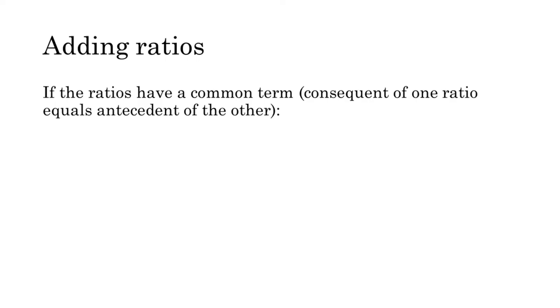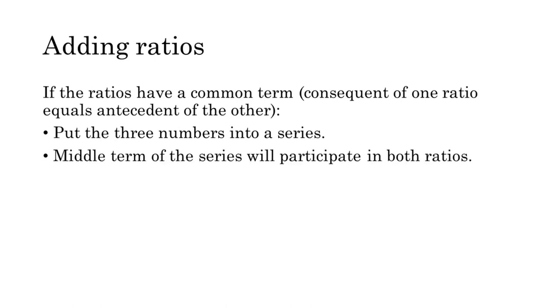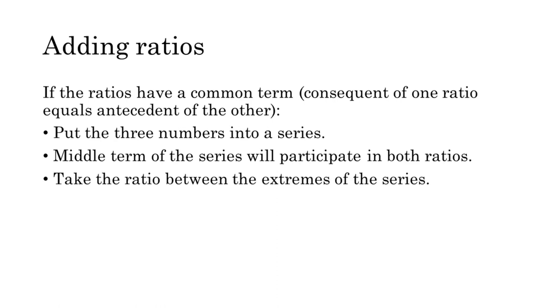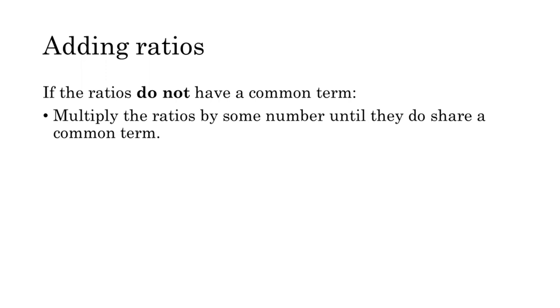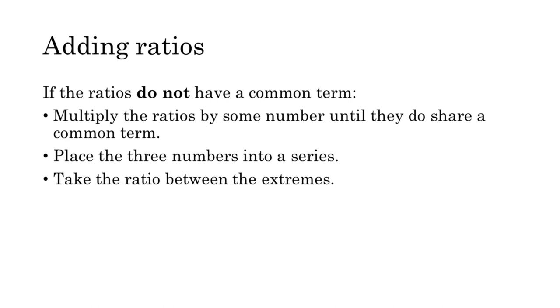Let's summarize the procedure for adding one ratio to another. If the ratios have a common term where the consequent of one ratio equals the antecedent of the other, you can put the three numbers into a series immediately. The middle term participates in both ratios, and the sum is expressed by the outer terms. If the ratios do not have a common term, multiply each ratio by some number until they do, then place the three numbers in a series and take the ratio between the extremes. Let's try one last example: adding 2 to 1 and 4 to 3. I encourage you to pause the video and work through the steps yourself.